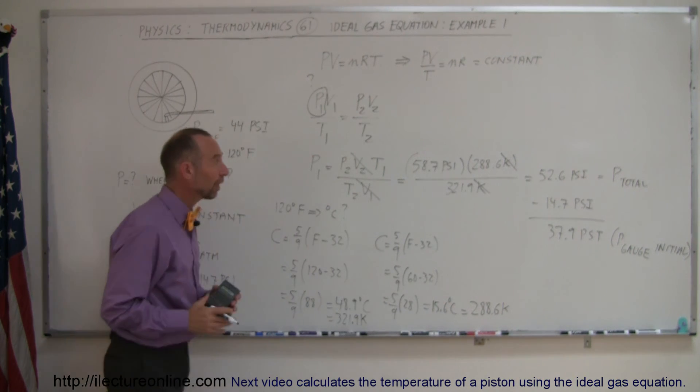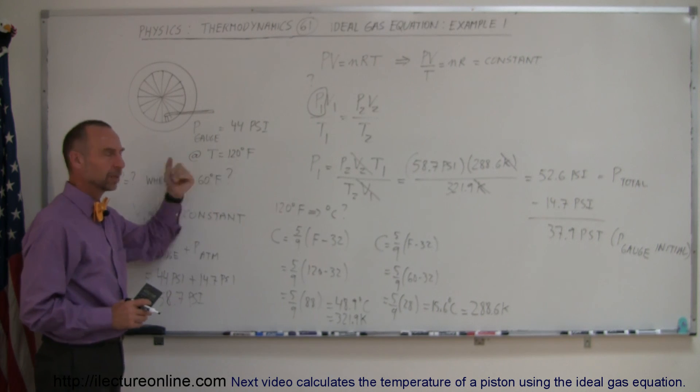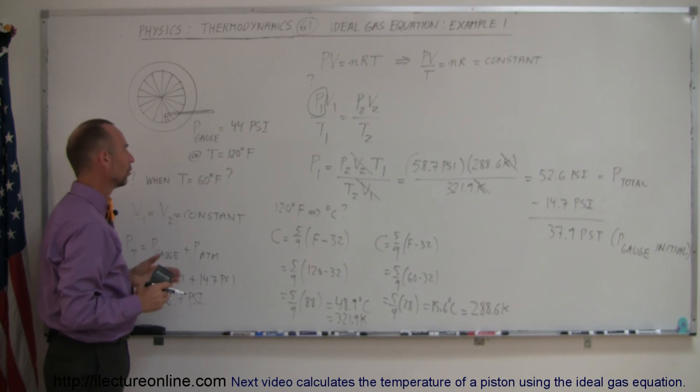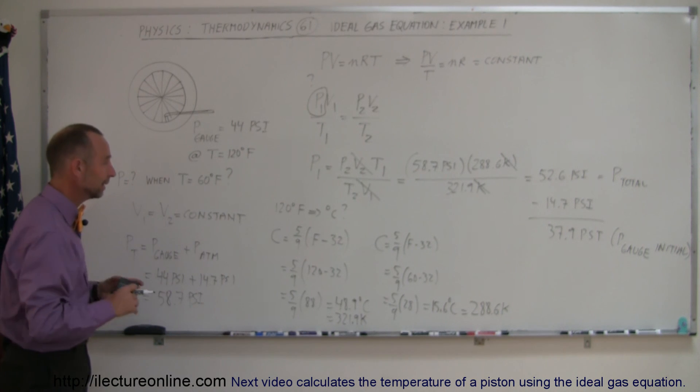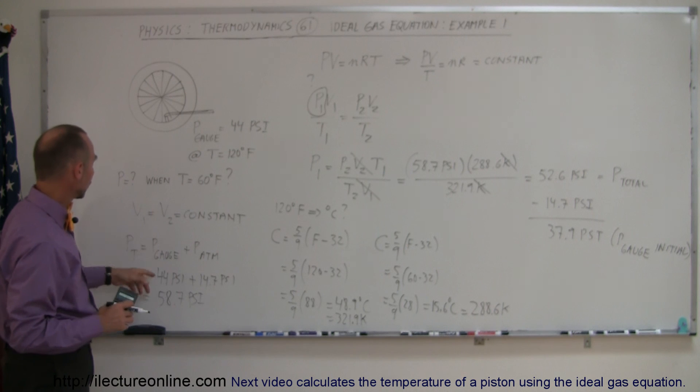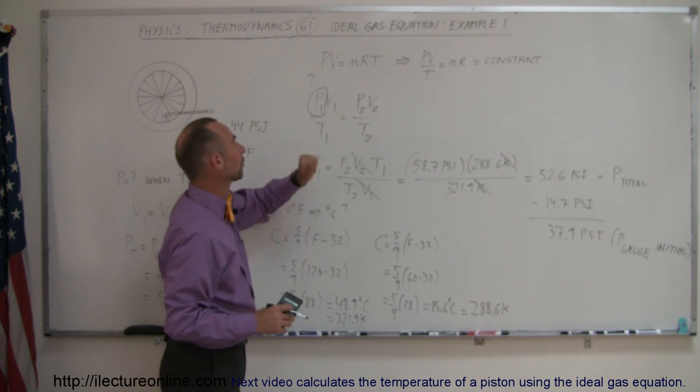So summarizing, we know that when we get in the desert, the tire temperature will be 120 degrees Fahrenheit. We don't want the pressure greater than 44 psi. So what would be the pressure that you want to put in the tires when the temperature is 60 degrees Fahrenheit, knowing they're going to get hotter? So we convert the temperatures to Kelvin.